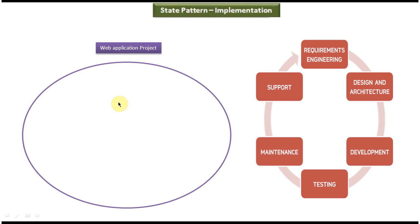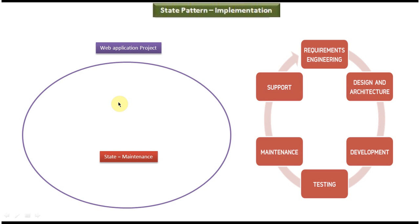Once development work is finished, the internal state will be moved to the testing state. In the testing state we can do manual testing or automation testing to make sure the project is correct and doesn't have any bugs. Once the testing phase is over, the state will be moved to the maintenance state, where we can maintain the project.